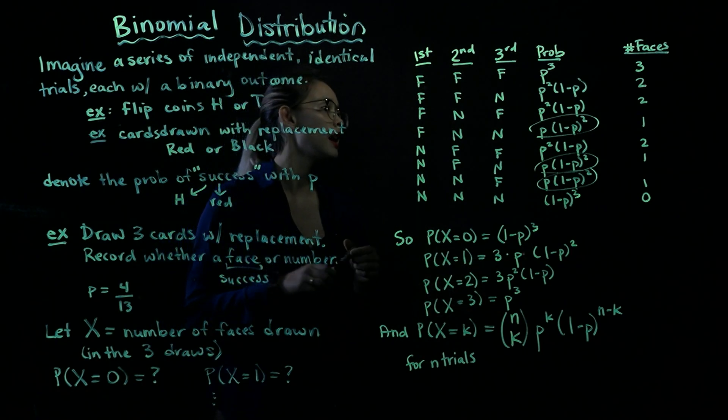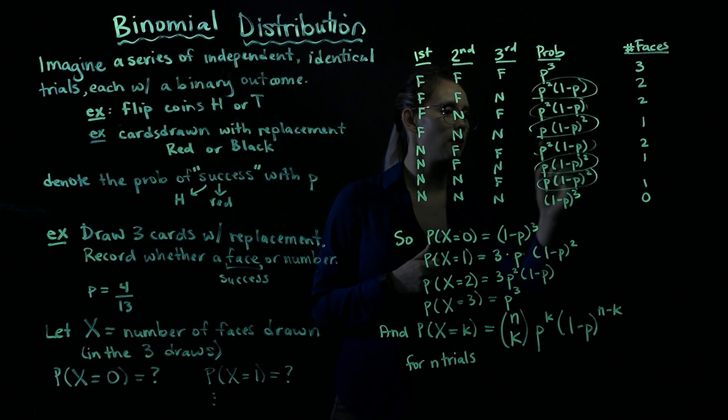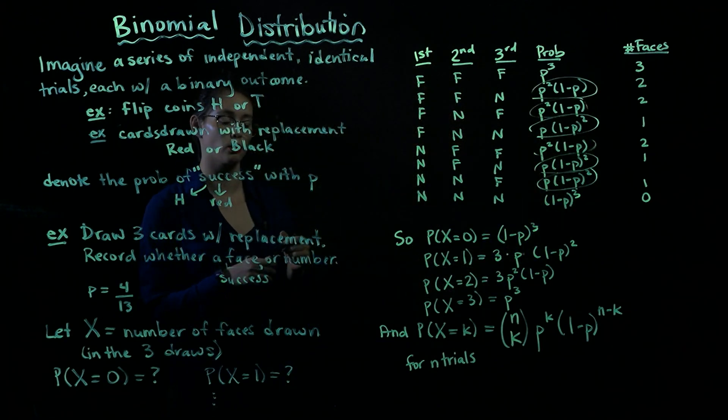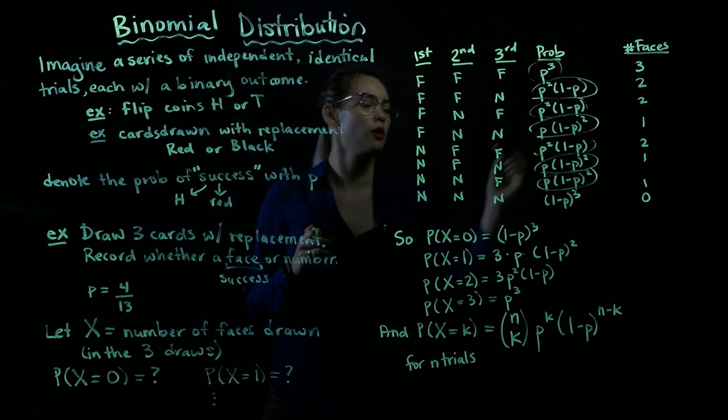Similar thing for X equals two, add up this number, this number, and this number to get the probability that X equals two. And then finally, for the probability X equals three, we just have P cubed.